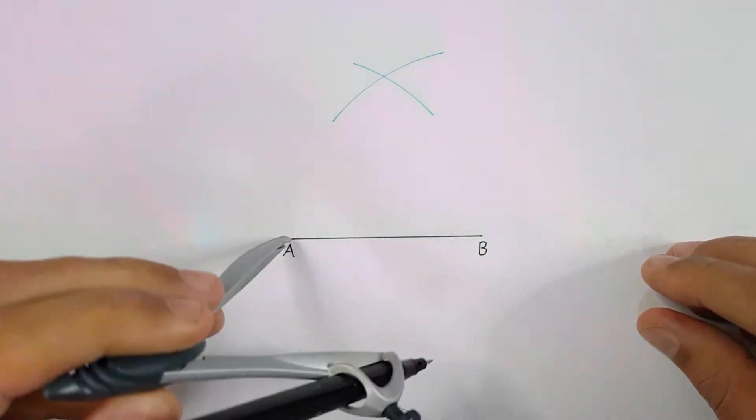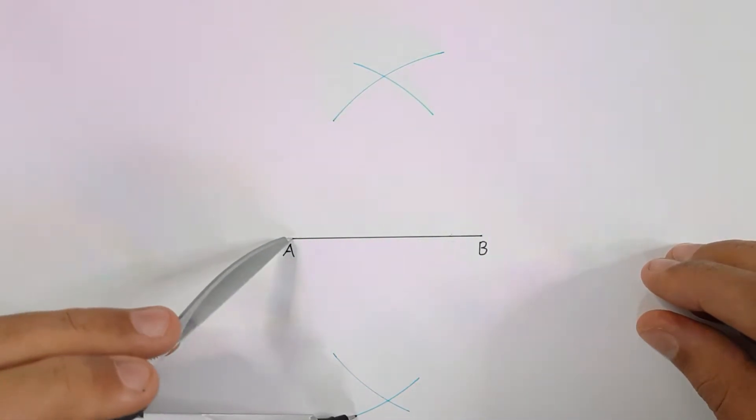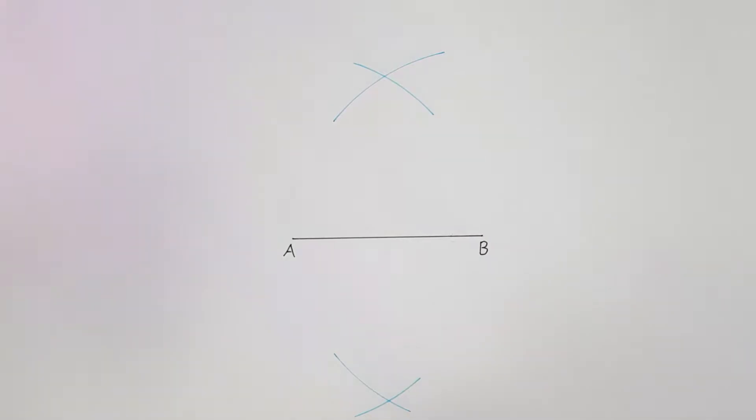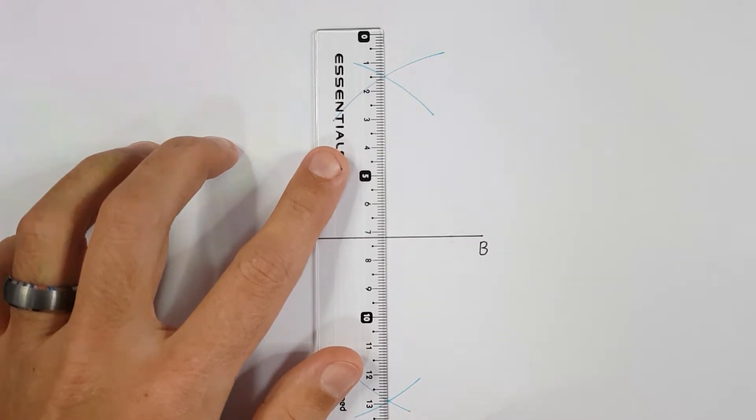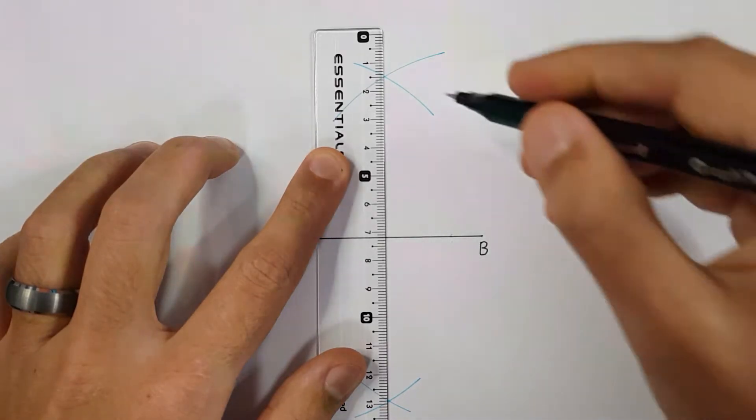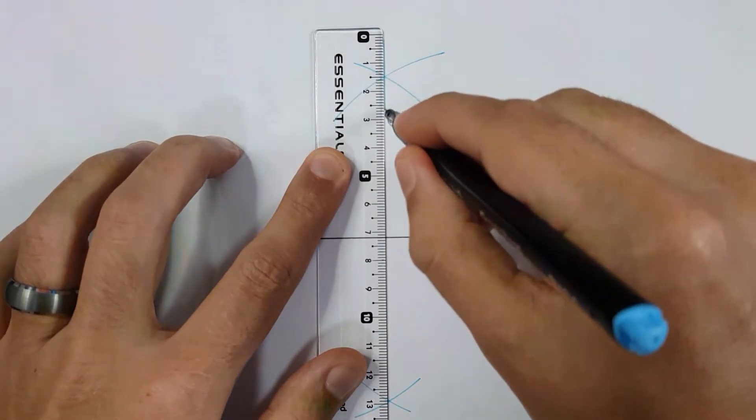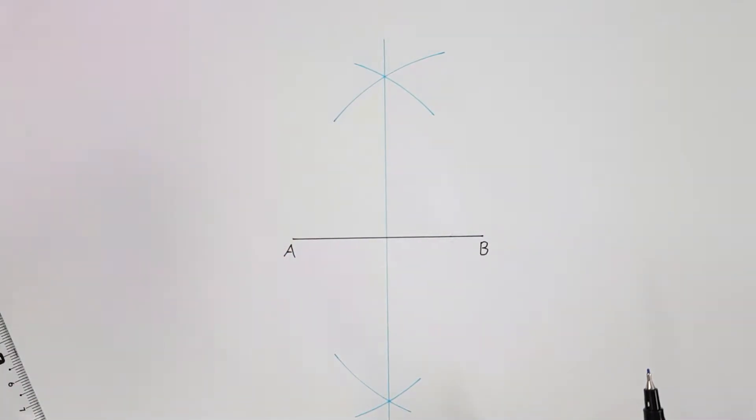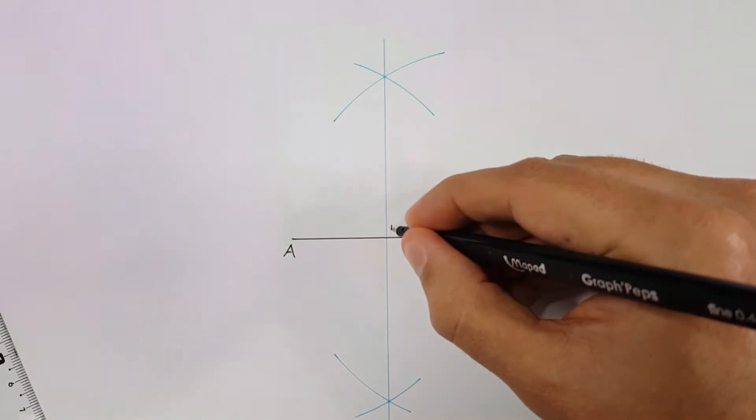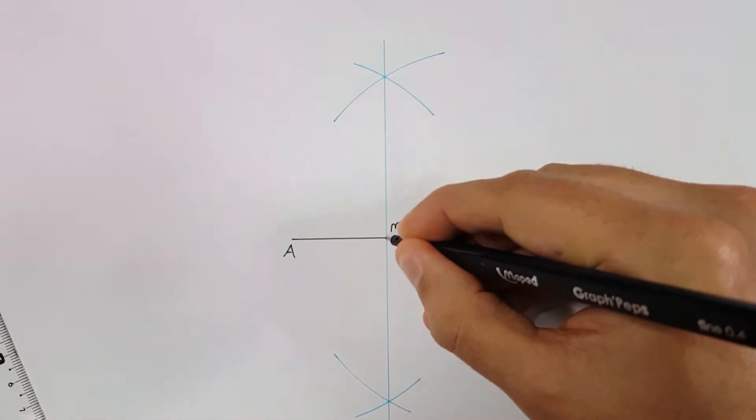You can now take your ruler and place it on the two crossing points and draw a line through them. Where this construction line sections are given line, that will be our middle point.